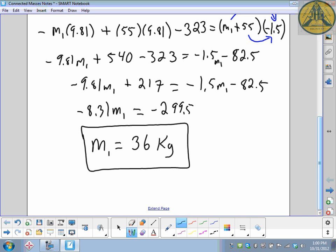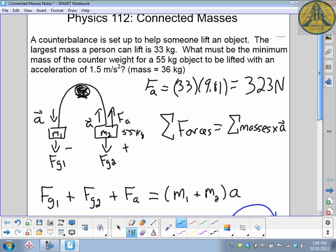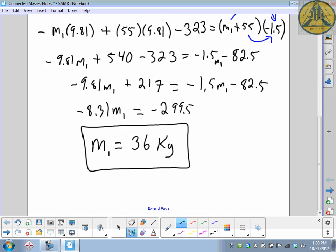Once again, recap: setting up the problem, add all your forces together equals the sum of all the masses times the acceleration. There's three forces: two forces of gravity from the masses in the problem and an applied force upward. The applied force upward is the same as the weight of a 33 kilogram object. Remembering that is kind of the key to solving this entire problem.